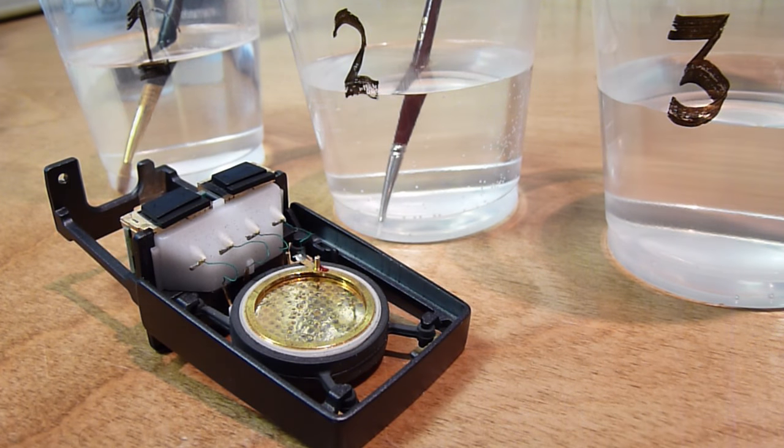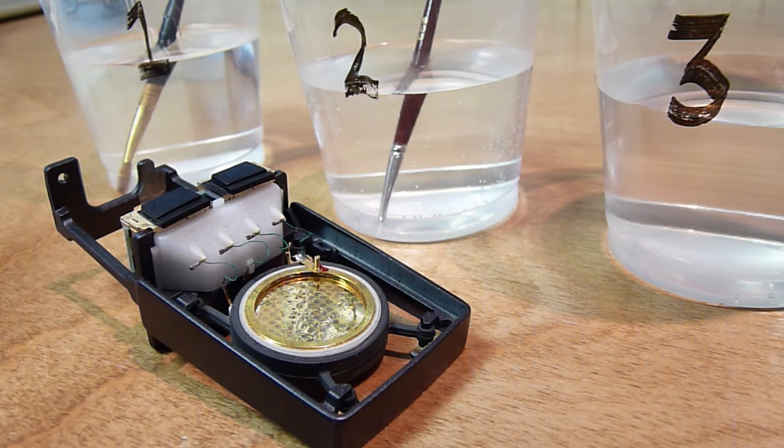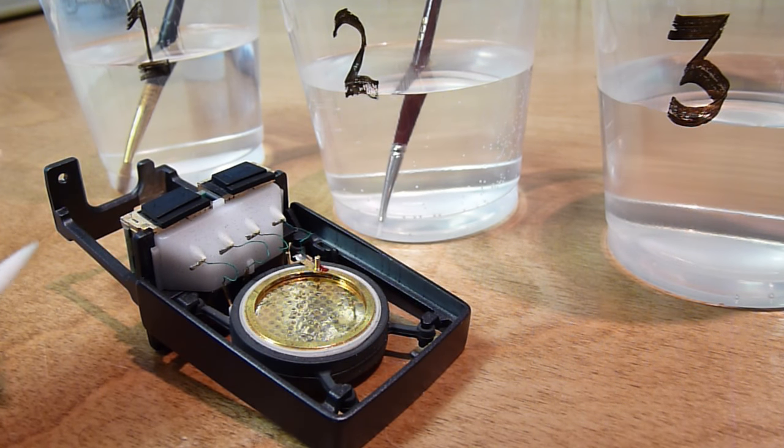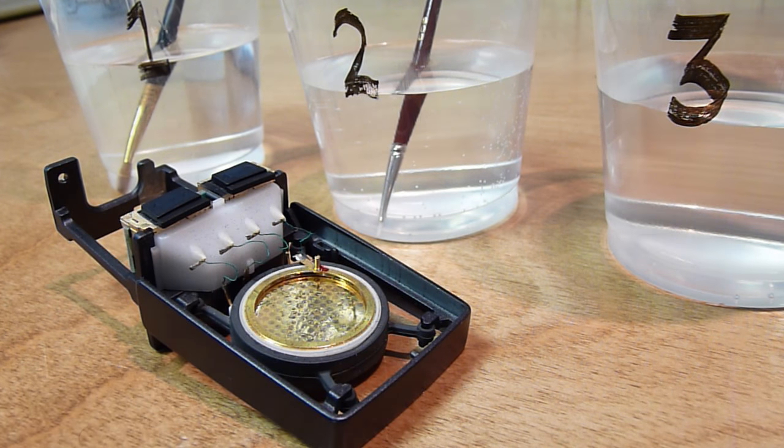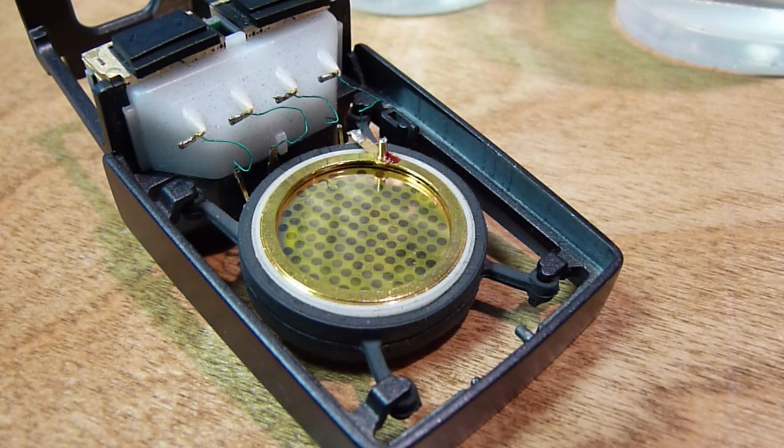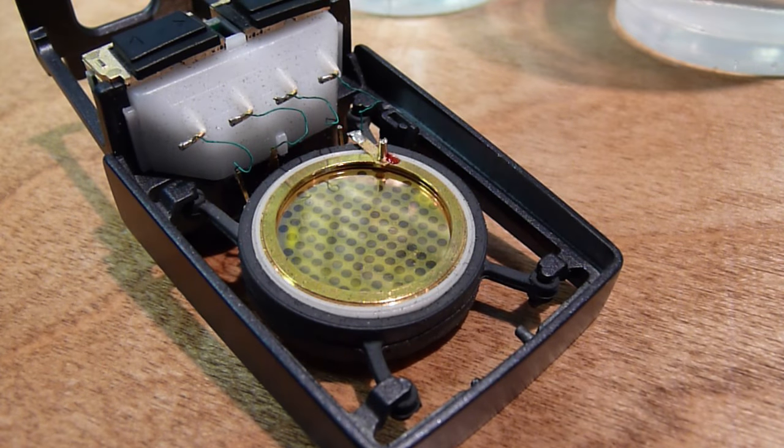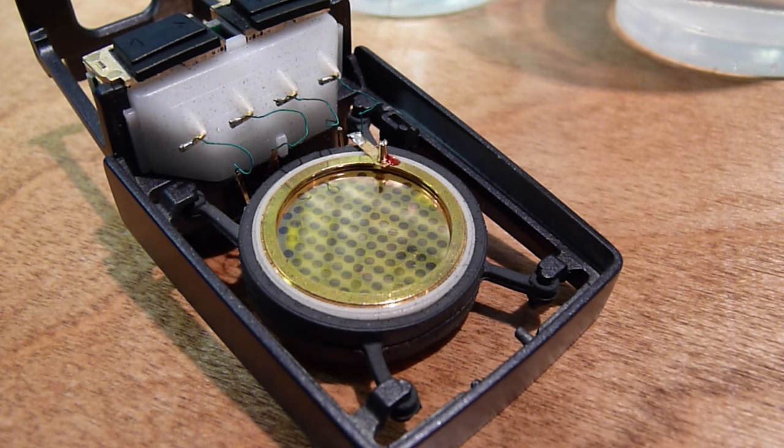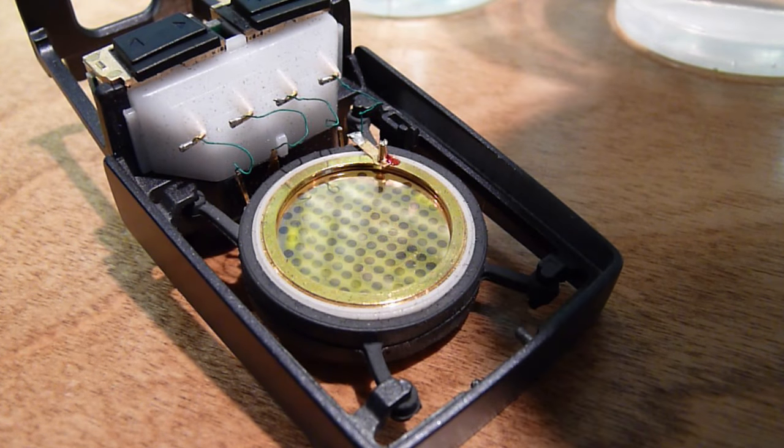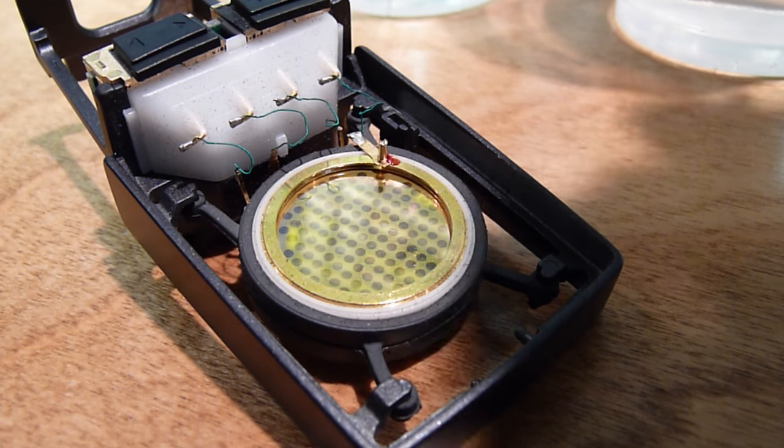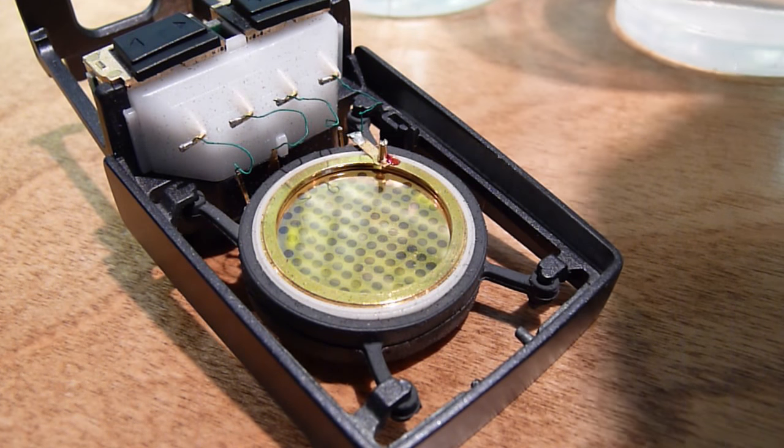Instead of rinsing this brush in my number three which is pure distilled water, I'm gonna rinse this in number one so I don't contaminate my number three. Now I'm going to use this can of compressed air and blow out the bristles and dry them. I've cycled that procedure a few times now and looks like I've got pretty much all of the debris.